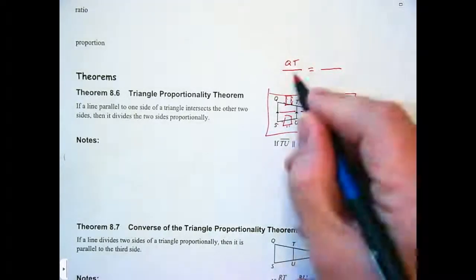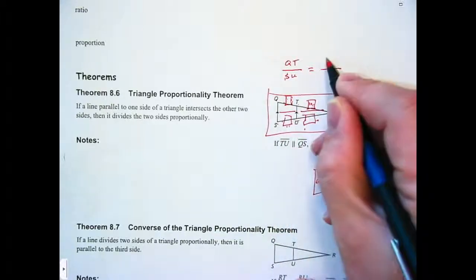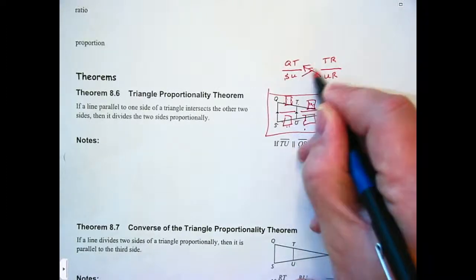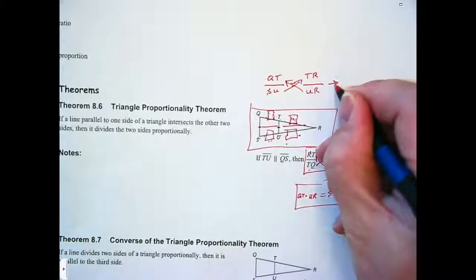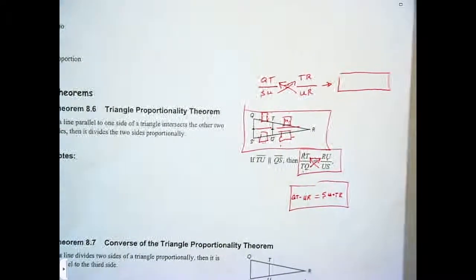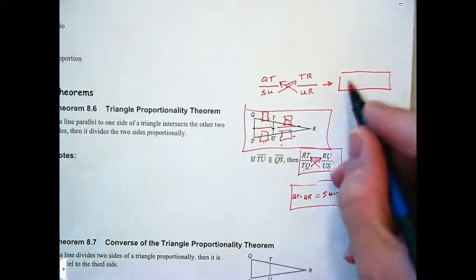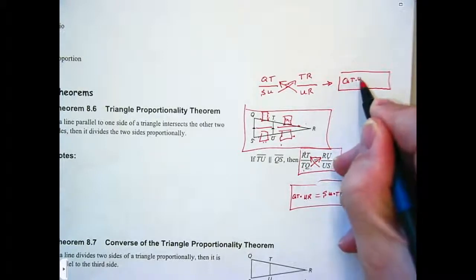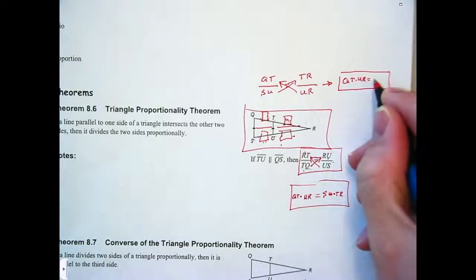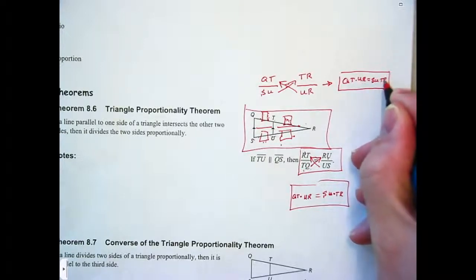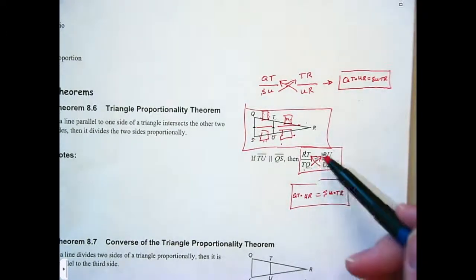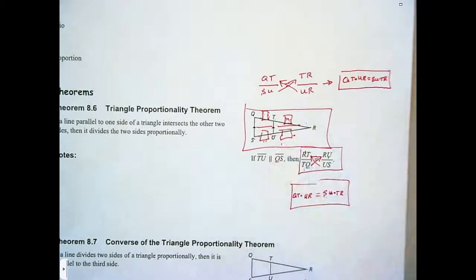We have QT over SU and TR over UR. Now, let's go ahead and cross multiply those and write that equation. What do you notice? Exact same thing. So there are different ways to form these proportions. Usually, you're going to see it the way they wrote it. But occasionally, you're going to see it the way that I just wrote it there.